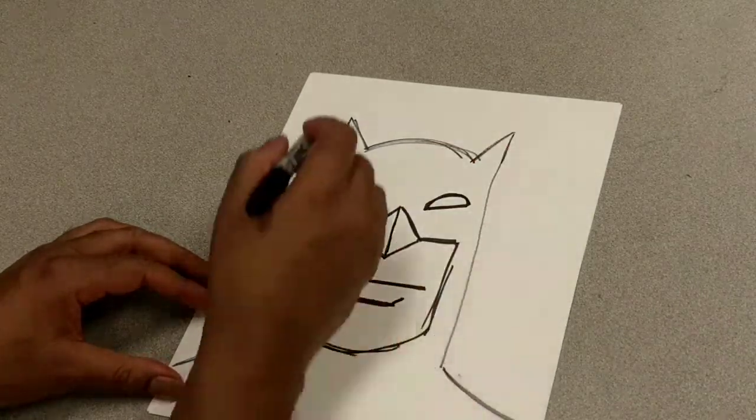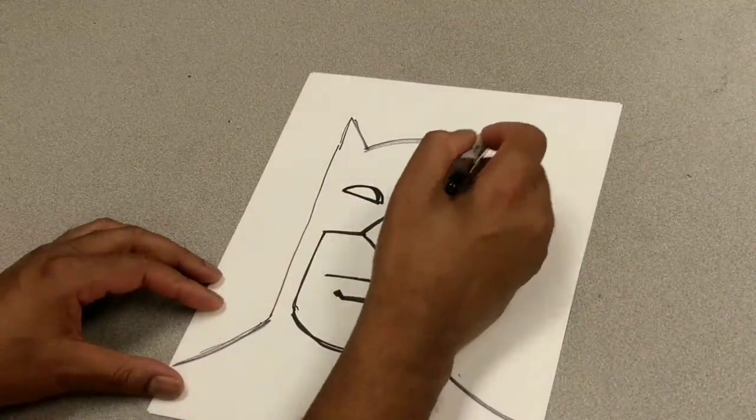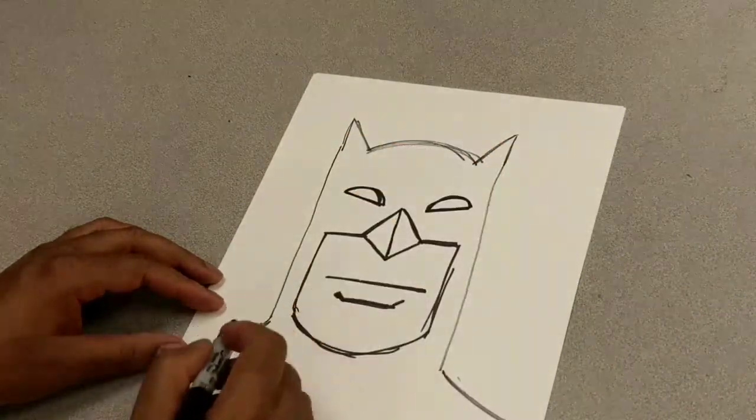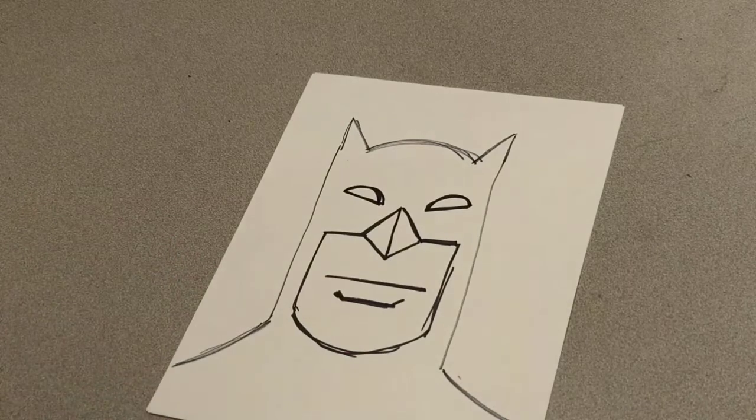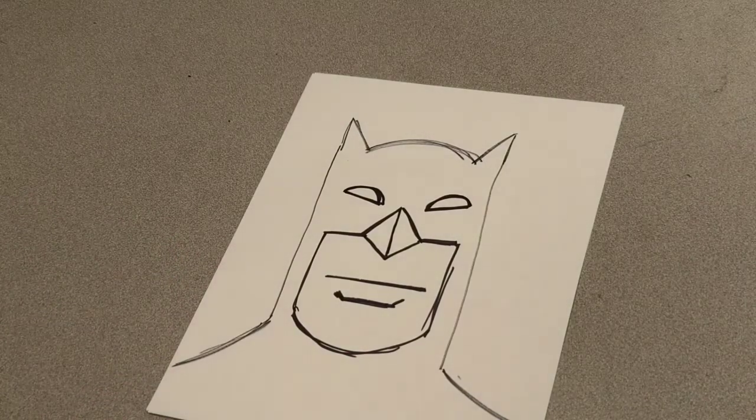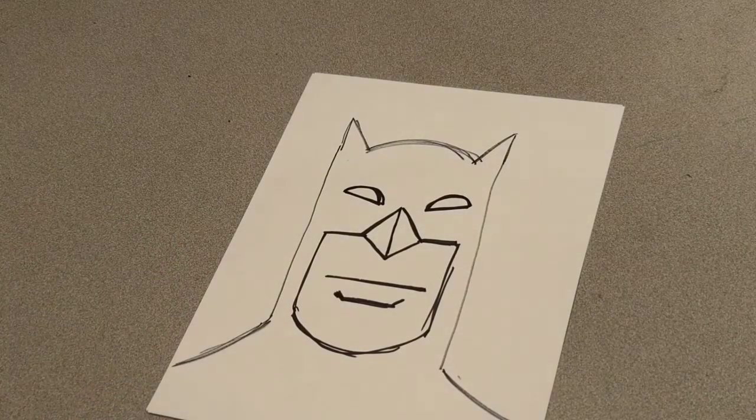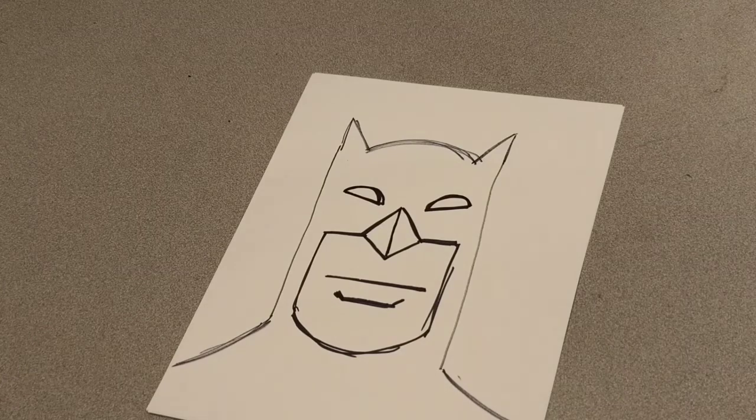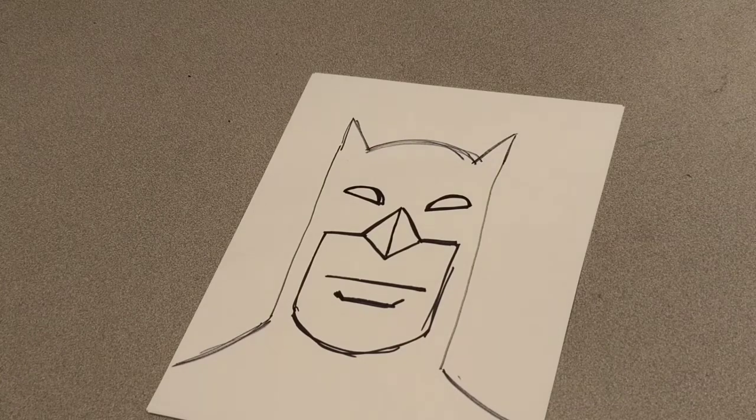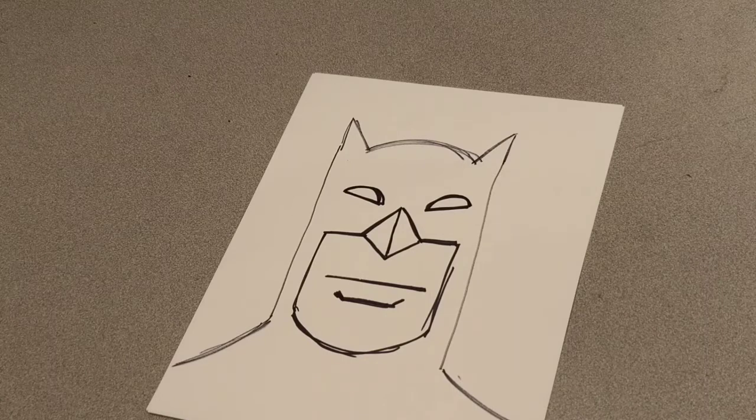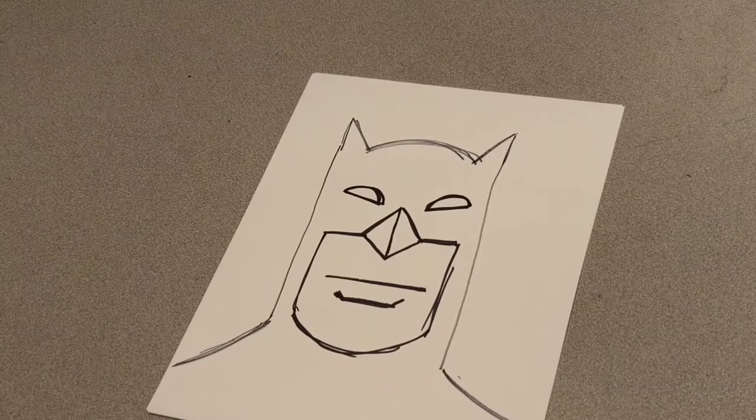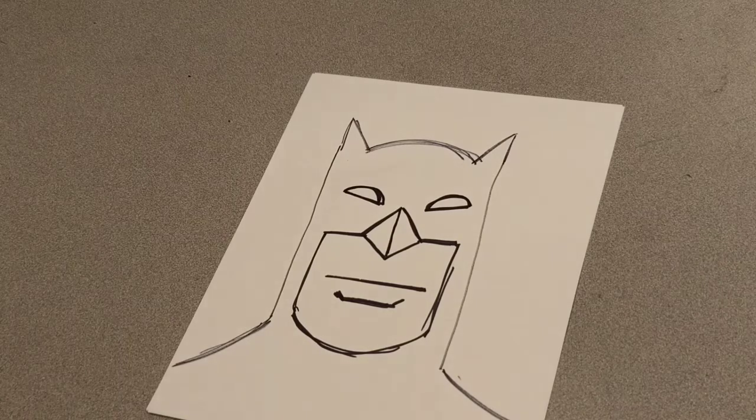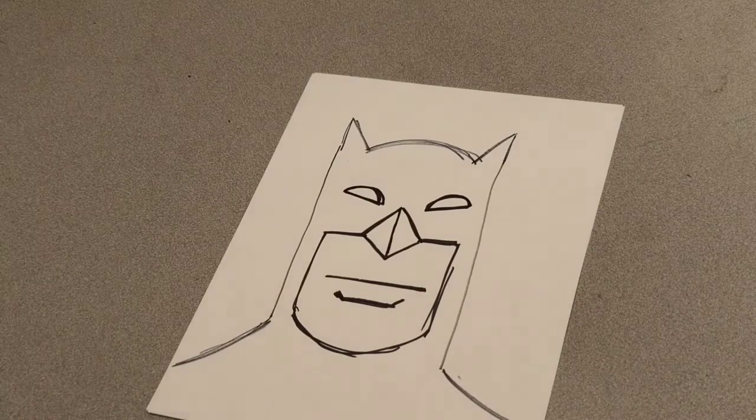So, we made the lines, the points, the upside down U. Now, we're going to get a crayon and color in his mask. I'm going to color in Batman's mask. I have a crayon right here.